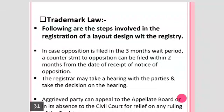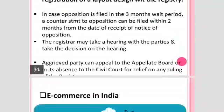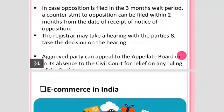In case opposition is filed within the three-month wait period, a counter-statement to the opposition can be filed within two months from the date of receipt of the notice of opposition. The registrar may then take a hearing with the parties and make a decision based on the hearing.